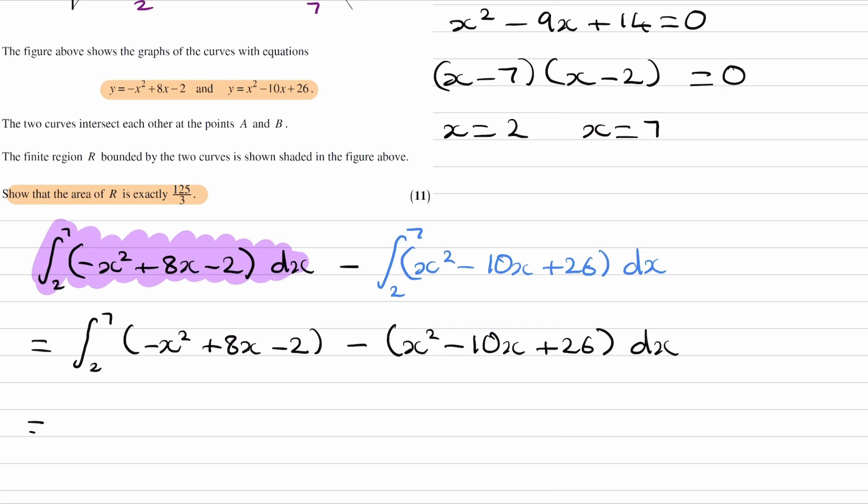So we can simplify the inside of this, which is what makes this easier. Minus x squared minus x squared, 8x minus minus 10x which makes it plus 10x, minus 2 minus 26.